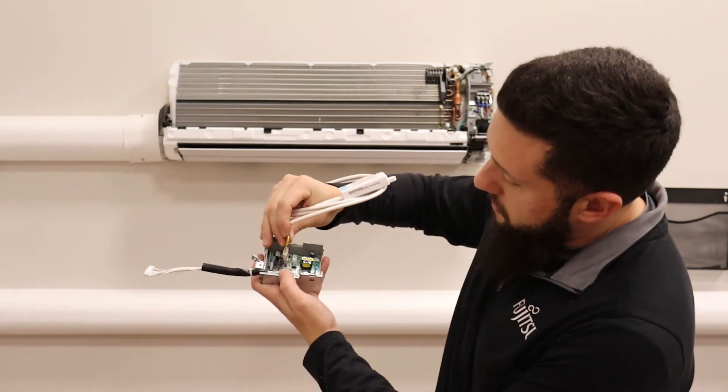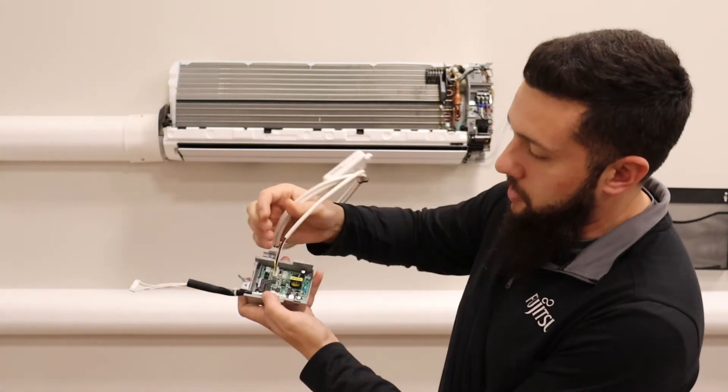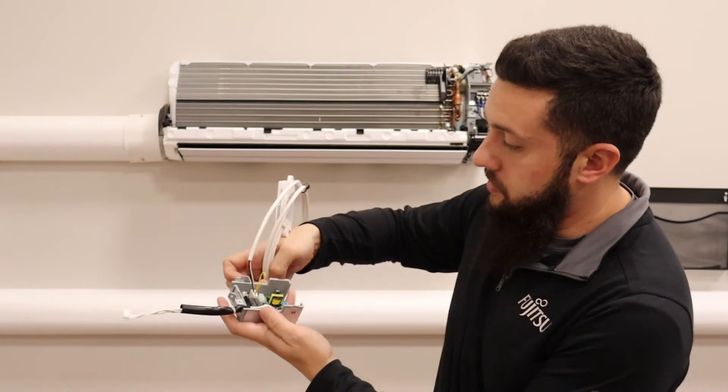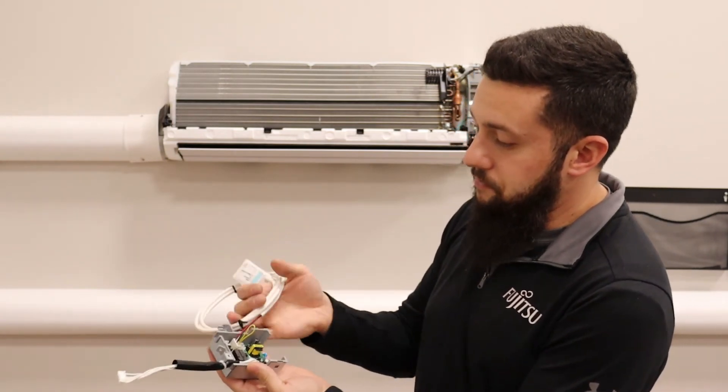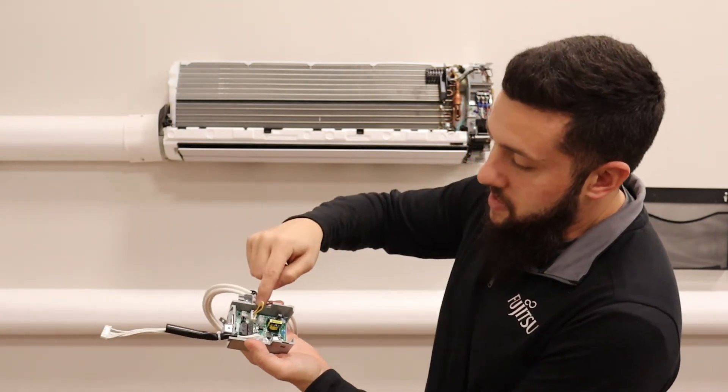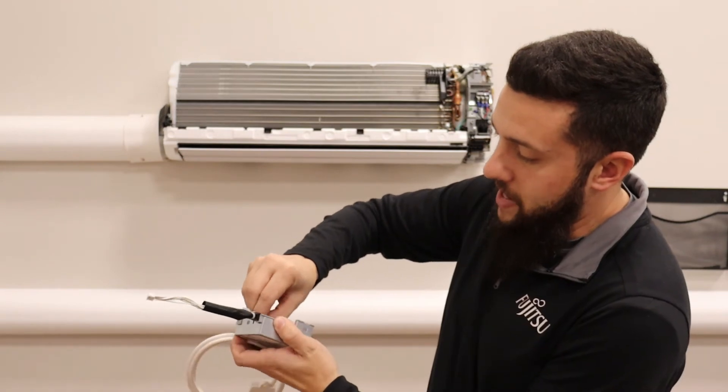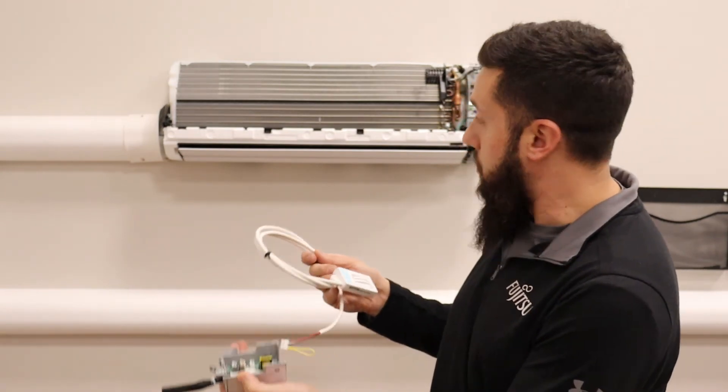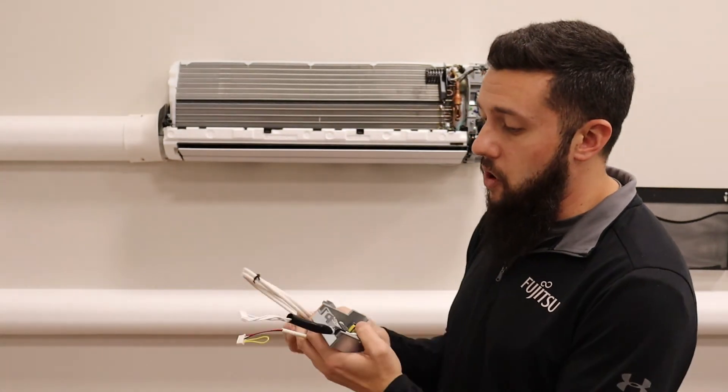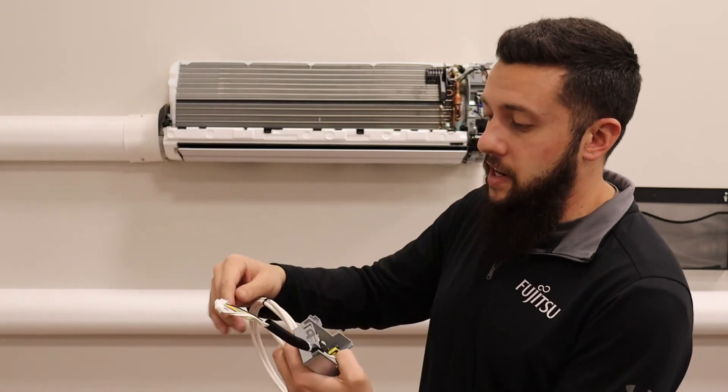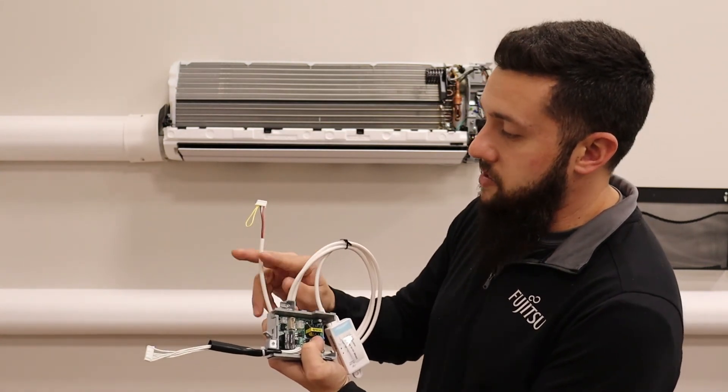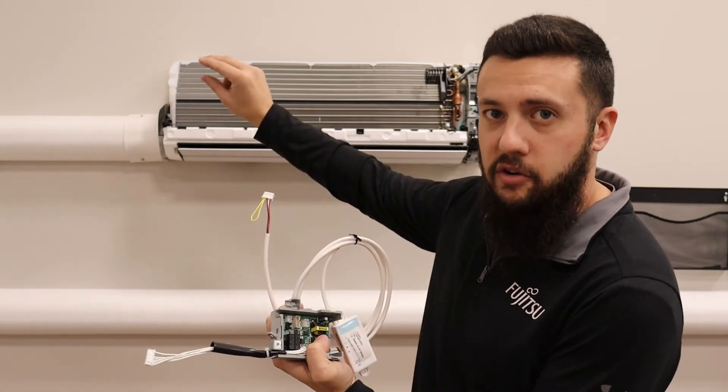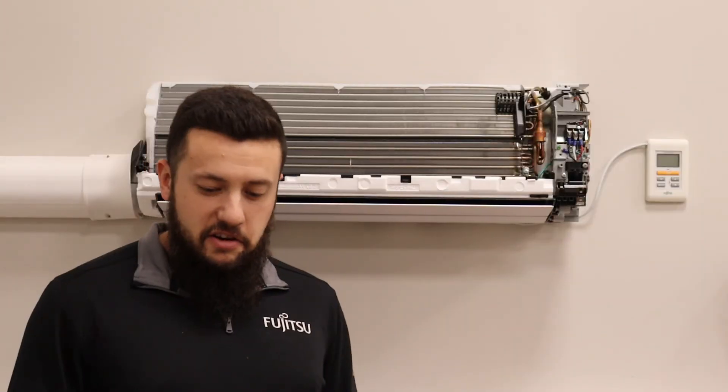So something like this—this would be the same connection that's on the Wi-Fi adapter if you wanted to hook up a wired thermostat like that one that we have on the wall. Basically it comes with a connector that is this connection with the wires coming off, so you could extend your wire over to your control. All right, so now that your interface kit has been installed with your wall thermostat, Wi-Fi adapter, or other accessory, now it's time to go ahead and reassemble the unit.